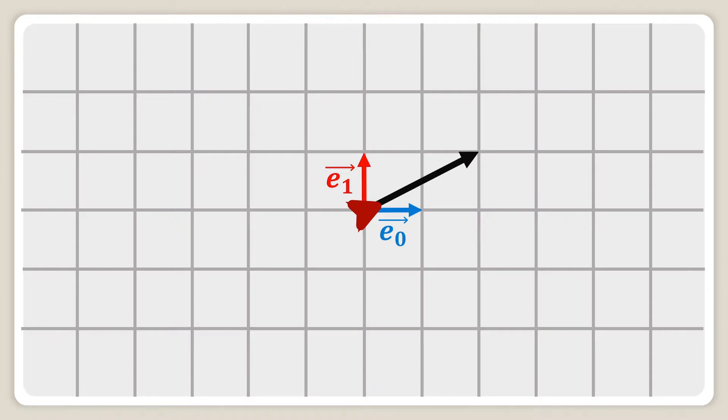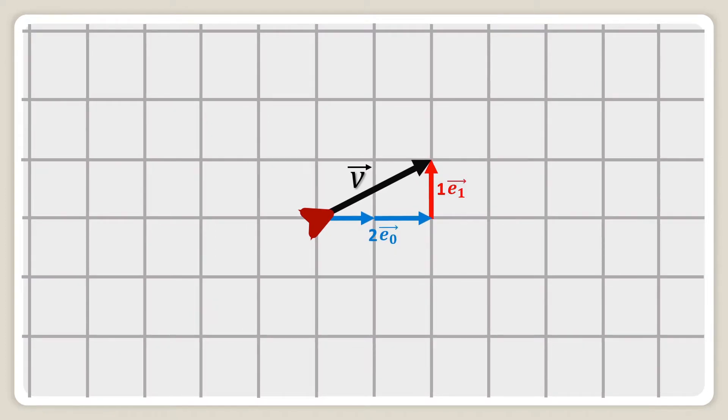With these two basis vectors, we can decompose the velocity as a sum. For example, two blue arrows and one red arrow. The numbers 2 and 1 are called the components of the vector.